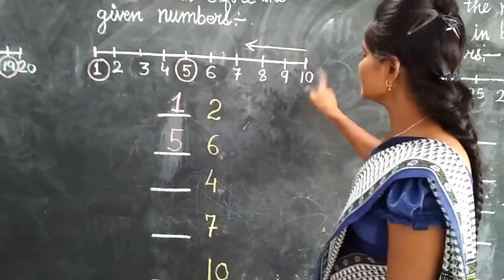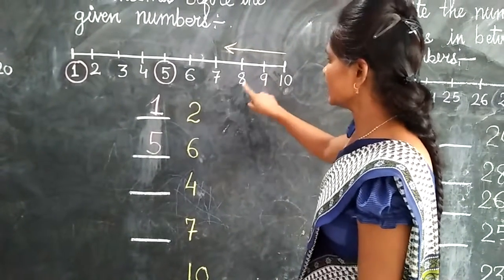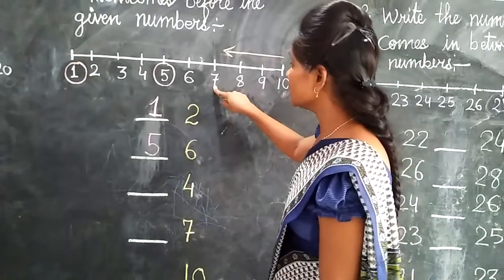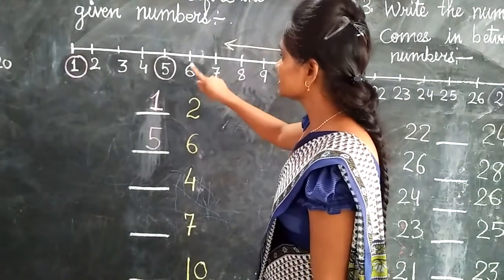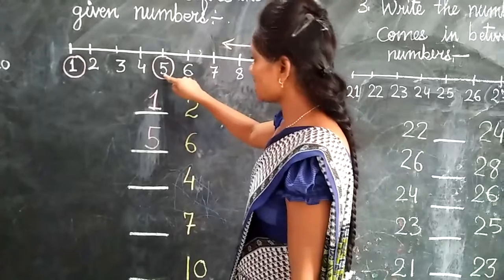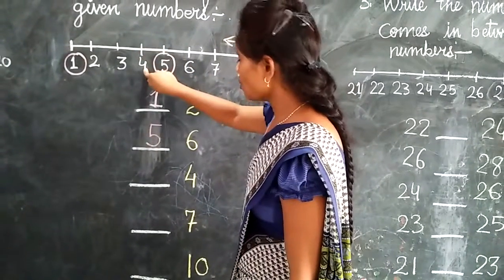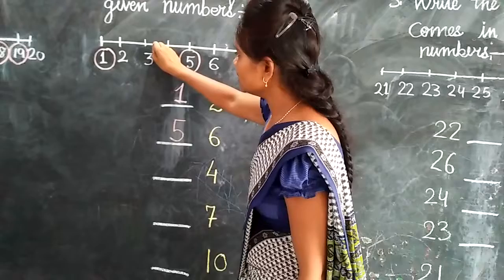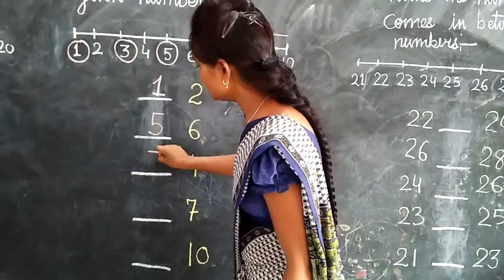Now next number is 4. Let's start backward counting from 10. What comes before 10? 9. What comes before 9? 8. What comes before 8? 7. What comes before 7? 6. What comes before 6? 5. What comes before 5? 4. What comes before 4? 3. Yes, we will write: 3.